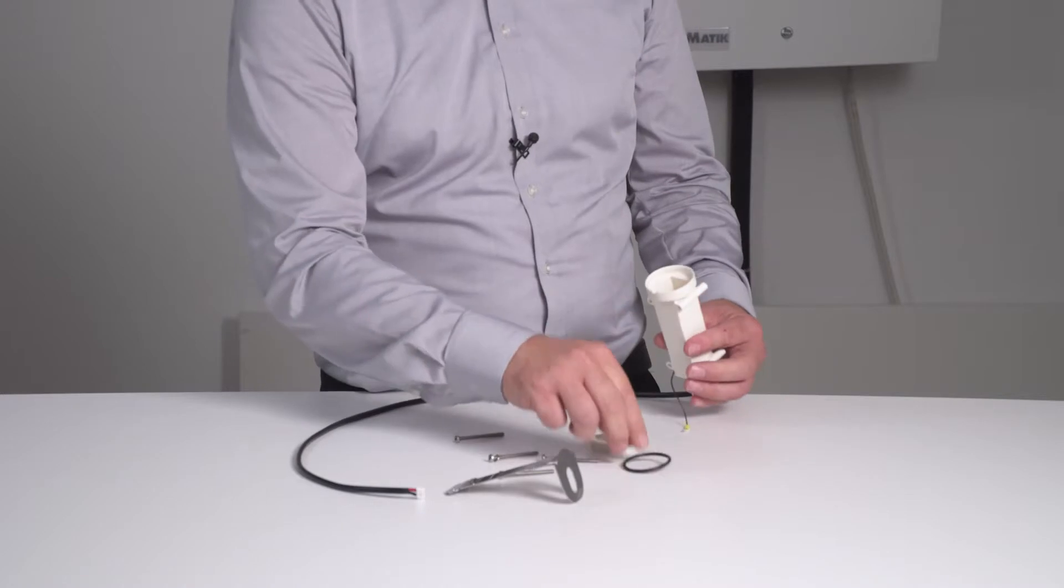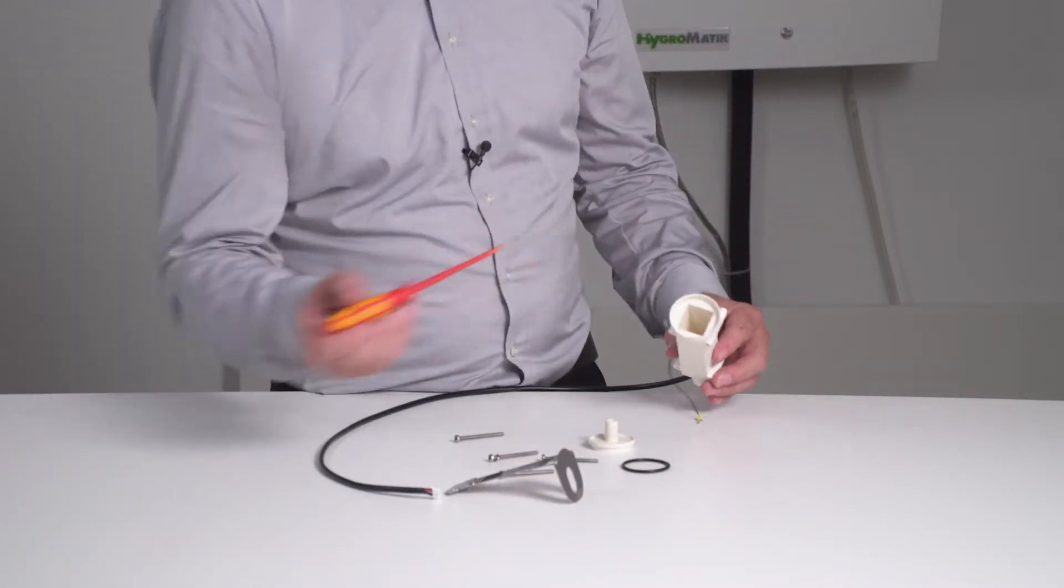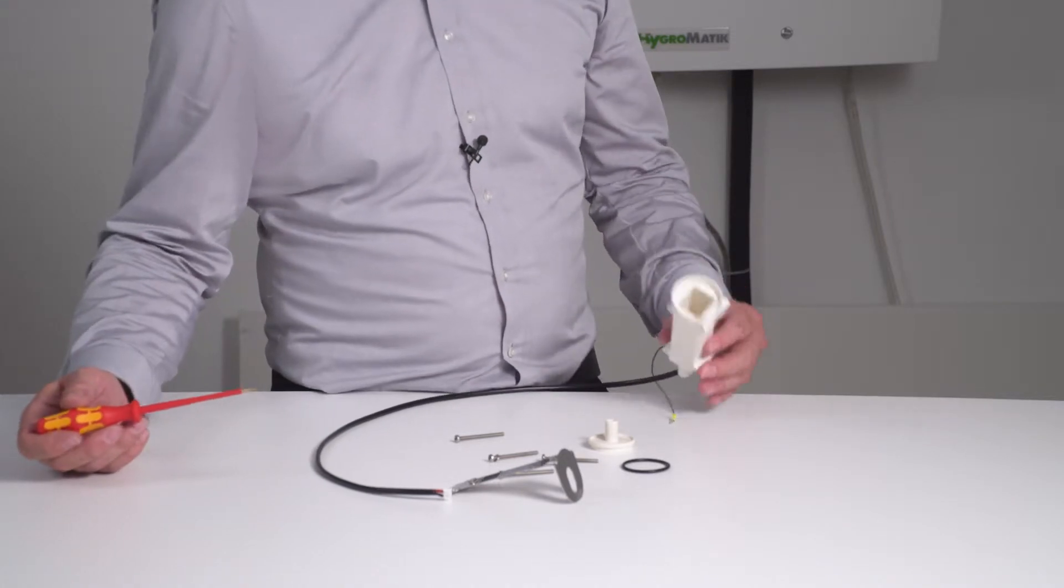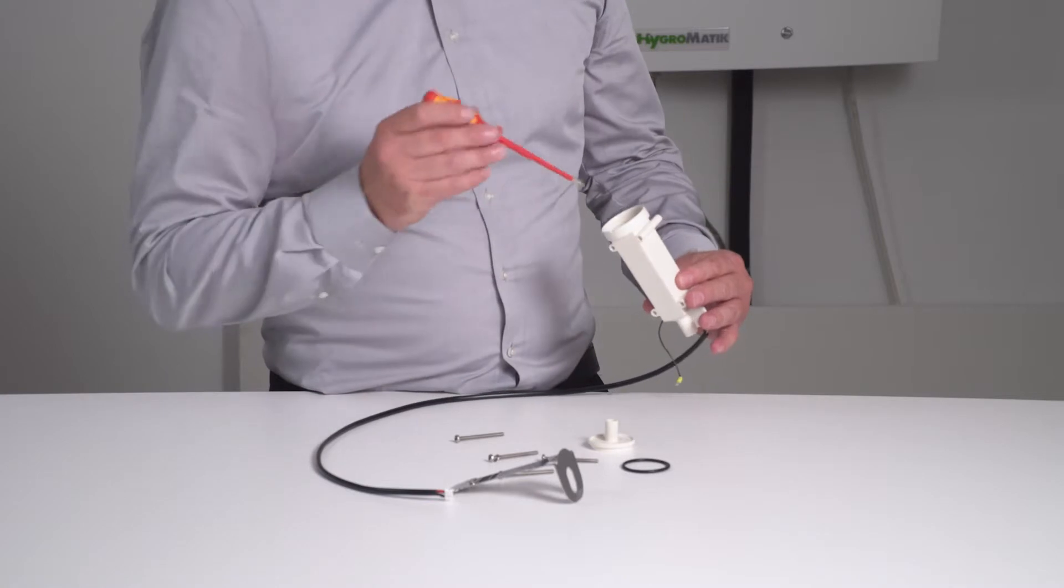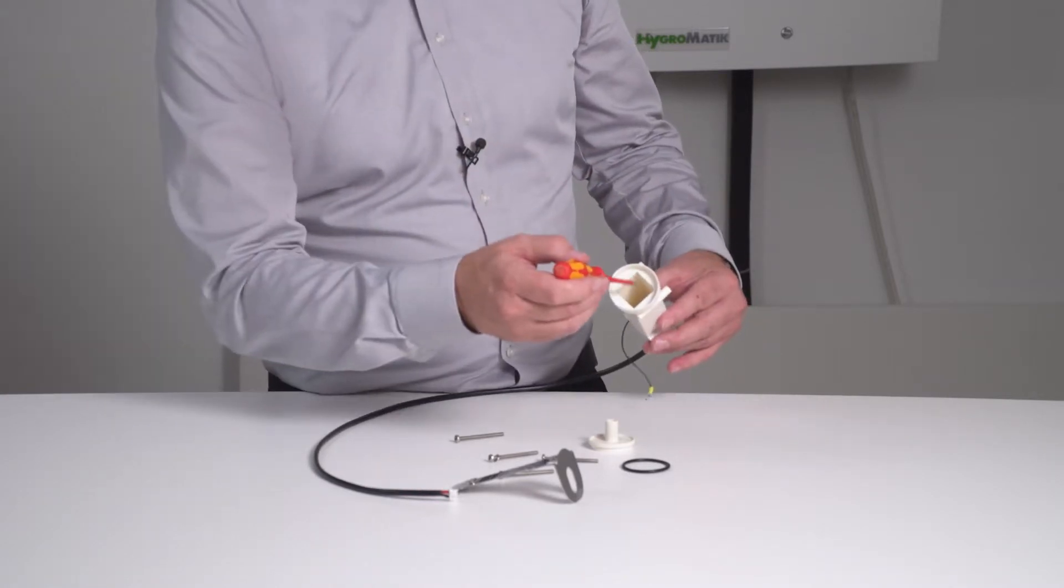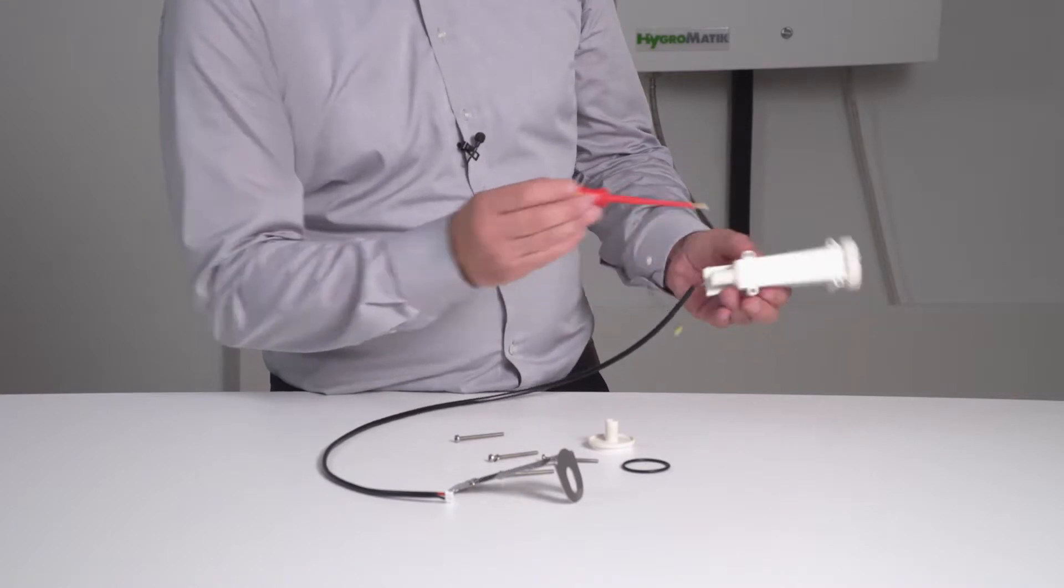Remove the o-ring. If there should be any deposits in this container, just take a screwdriver and then scrape off the deposits. Also, please scratch around the connection.